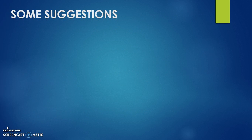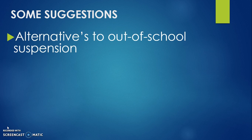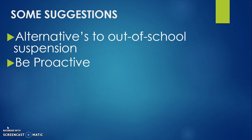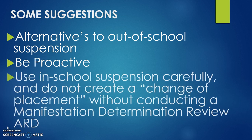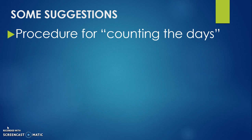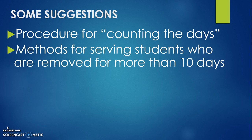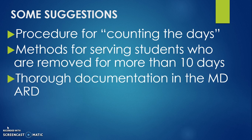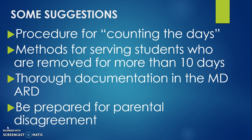The following are suggested strategies for staying in compliance. Whenever possible, try to find alternatives to out-of-school suspension. Be proactive — if a student is exhibiting challenging behaviors, hold a problem-solving ARD meeting and consider conducting a functional behavioral assessment and developing a behavior intervention plan before suspension accumulates to more than 10 days. Use in-school suspension carefully and do not create a change of placement without conducting a manifestation determination review ARD. Have a procedure for counting the days for each student with a disability. Develop methods for serving students who are removed for more than 10 days. Provide thorough documentation in the MDR of the discussion of how the disability manifested itself in the student, rationale for the decision, and explanation of why. And lastly, be prepared for parental disagreement.